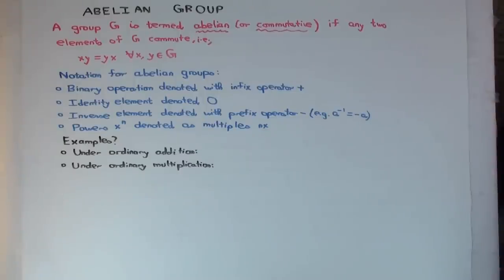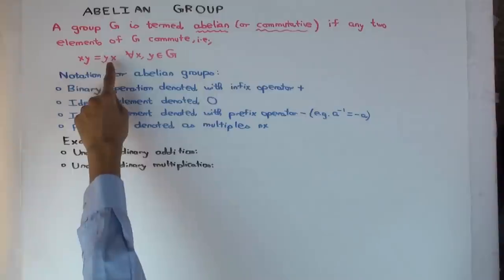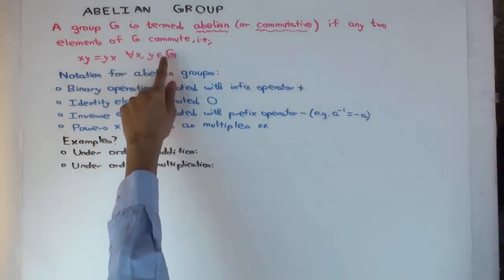Okay, so in this talk I'm going to quickly define abelian group and introduce some notation associated with abelian groups. So a group is termed abelian if any two elements of the group commute, which means x y equals y x for all x, y in the group.